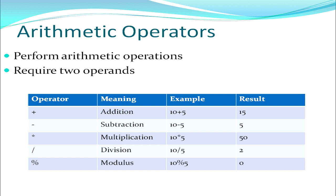The percent sign gives you the remainder of a division. When we divide two numbers we get two things: the quotient and the remainder. If I want the quotient I use the division operator (slash). If I want the remainder I use the modulus operator (%). As the example shows, 10 divided by 5 gives you a quotient of 2, but 10 modulus 5 gives you 0 because the remainder is zero.